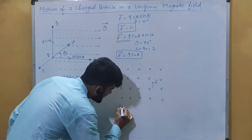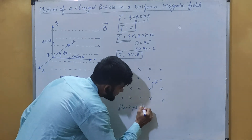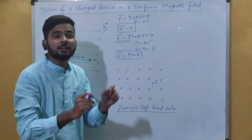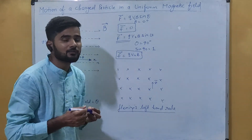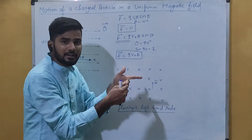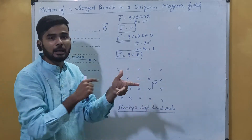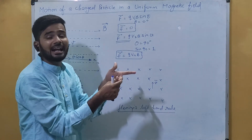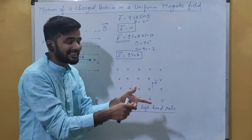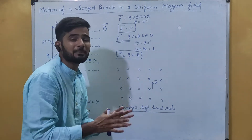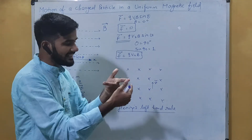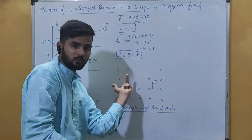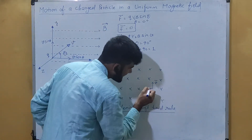To find the force we use Fleming's Left Hand Rule, which you may have studied in class 10. You stretch the four fingers, middle finger, and thumb of the left hand so all three are perpendicular to each other. The four fingers represent the magnetic field, the middle finger represents the direction of velocity, and the thumb represents the direction of force. Applying this rule: the magnetic field is into the page, velocity is upward, so the thumb points in the direction of the force.